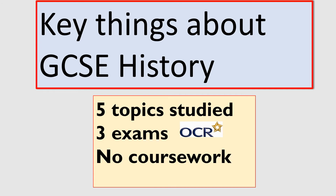So the key things about GCSE history: there are five topics studied, which I'm going to be going over in the next few slides. There are three exams, the exam board is OCR, and there is no coursework for history at all. Over the next few slides we're going to look at the topics you will be studying if you choose to take this GCSE, so it's worth finding out just a little bit more about these five different topics.